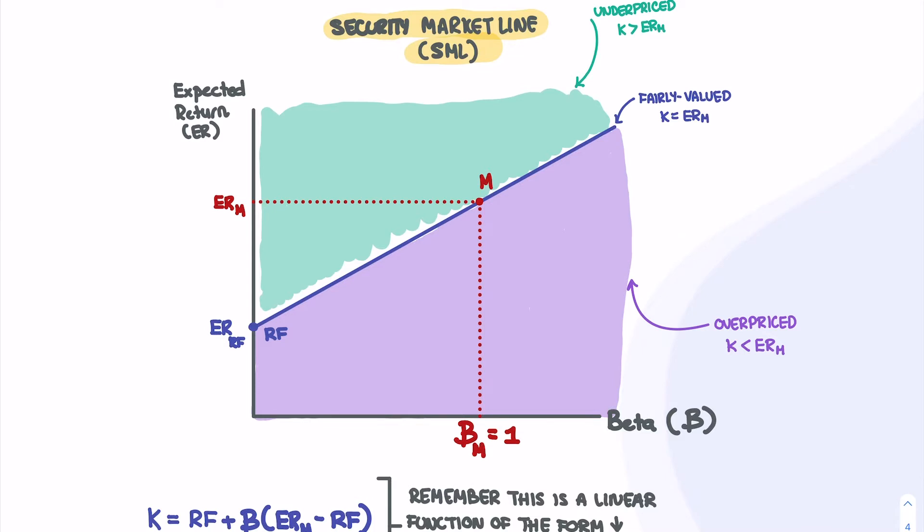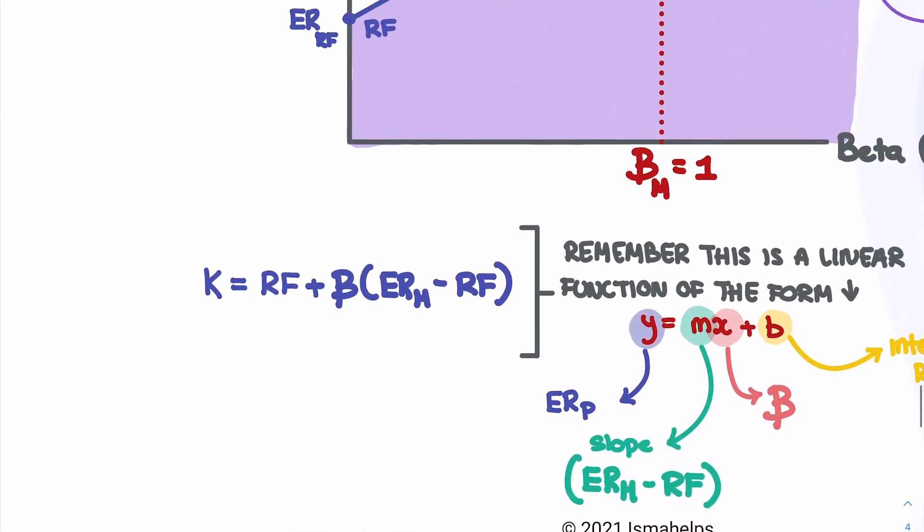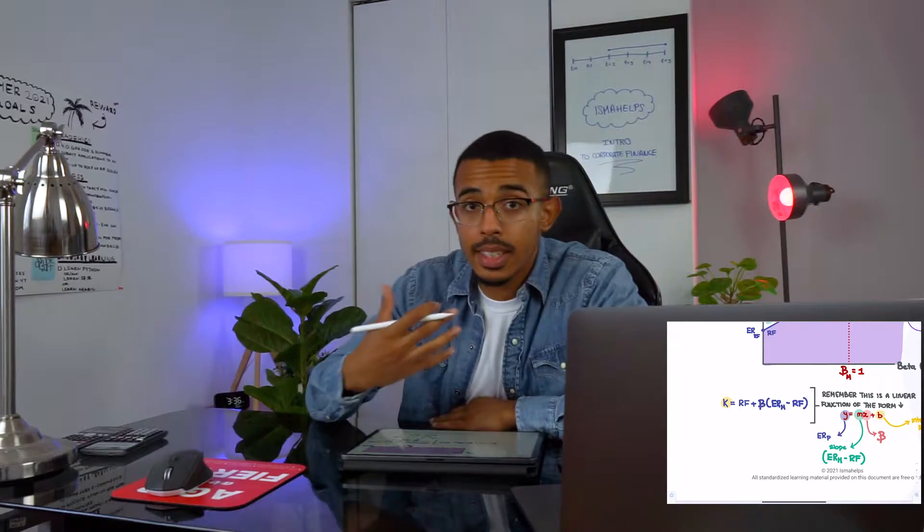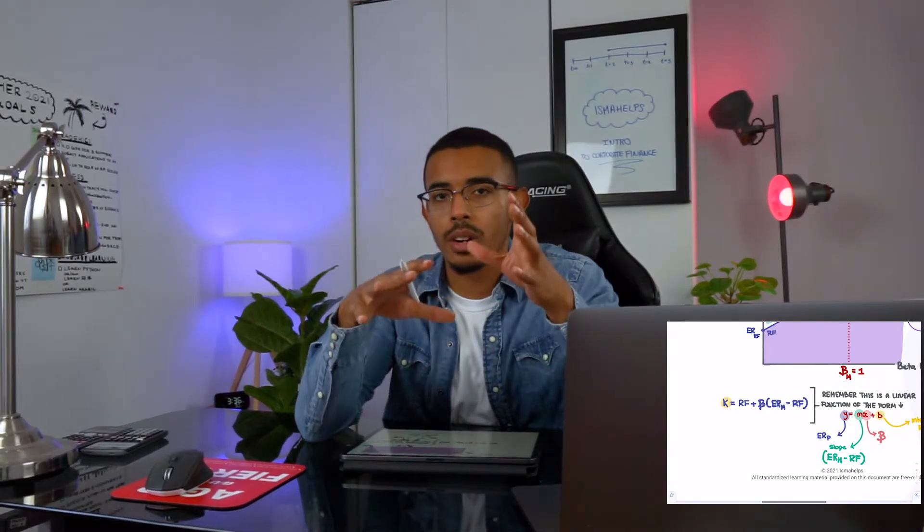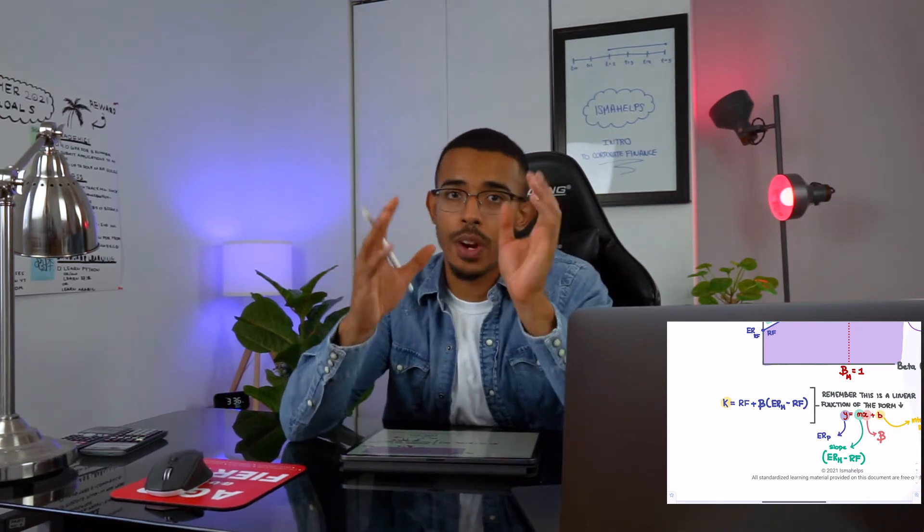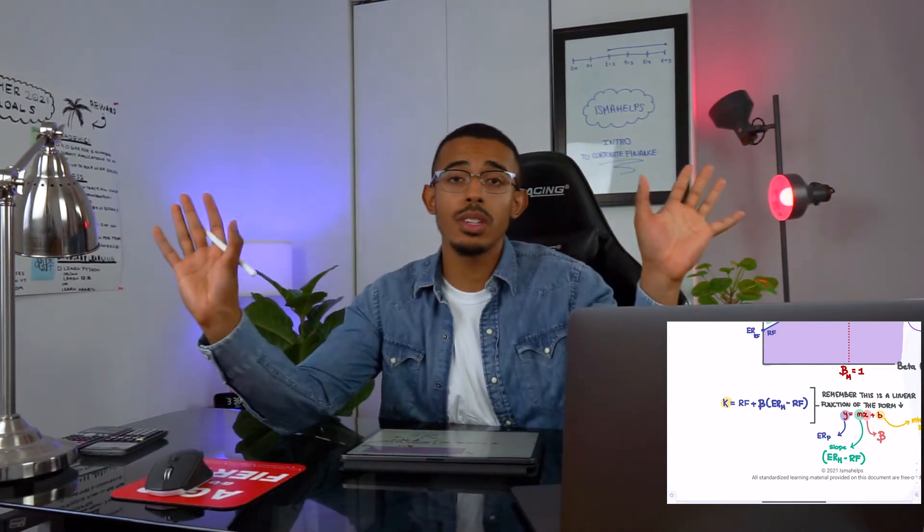I took the time to make a really cool graph in which you find three sections: our underpriced section, our fairly valued section, and our overpriced section. What I want you to know is that when we use our formula, which is K equals RF plus beta times our market risk premium, whatever we get as our K will be our indicator to figure out whether that stock is overvalued, undervalued, or fairly valued.